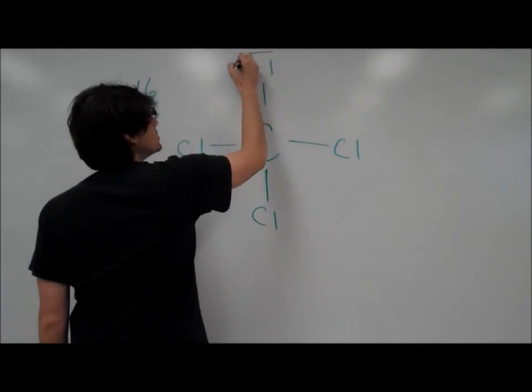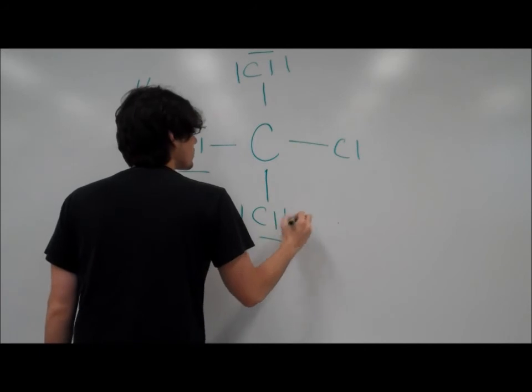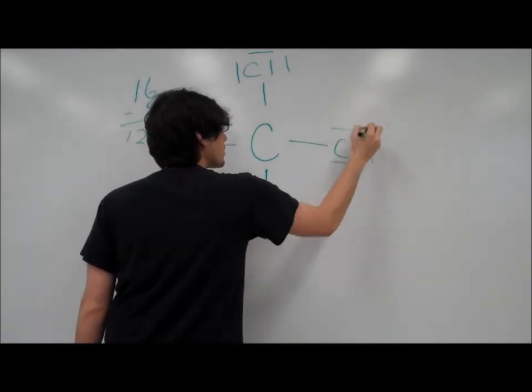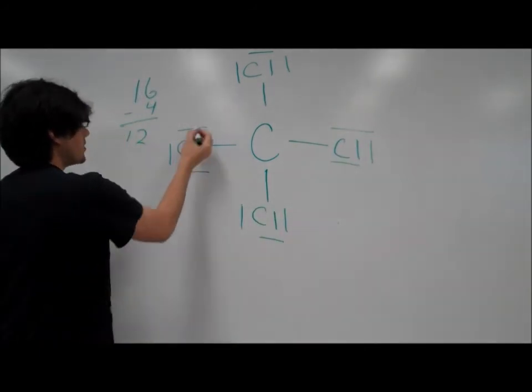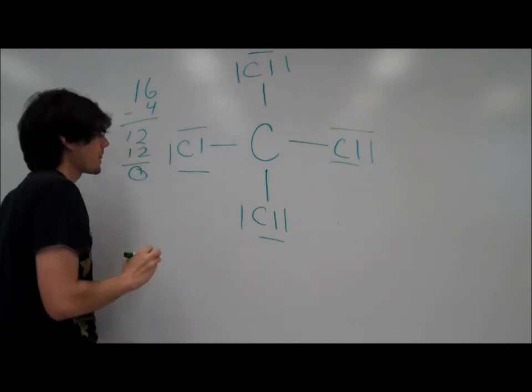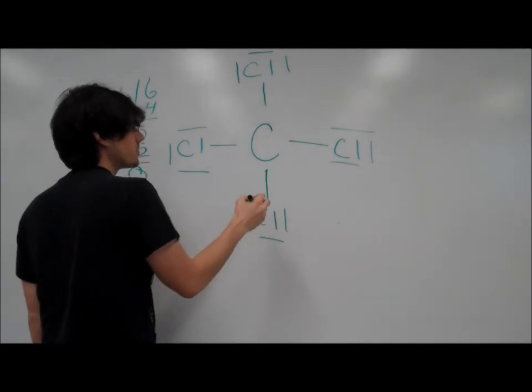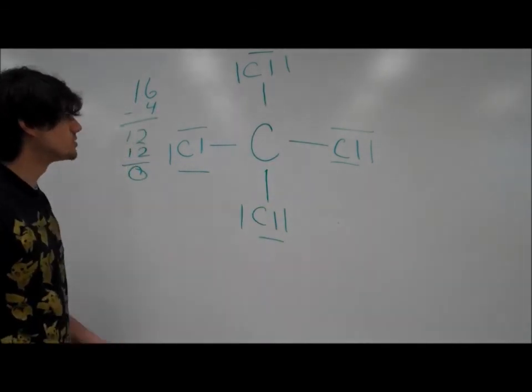Chlorine one, two, three. We need this. We'll then notice that we've used 12 pairs, which will leave us with zero. Each one of our atoms has eight electrons, which means that our Lewis structure is complete.